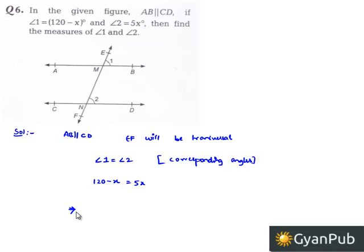That implies, let us transform this x to the right hand side, then we get 5x plus x is equal to 120 degrees. That implies 6x is equal to 120 degrees, which is nothing but x is equal to 120 degrees by 6, which is finally equal to 20 degrees.